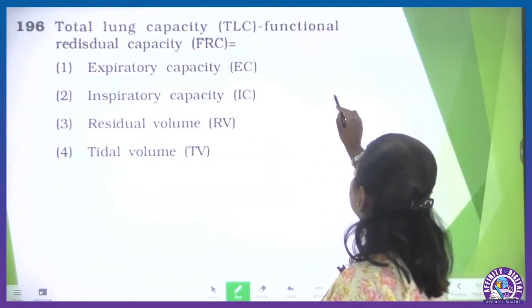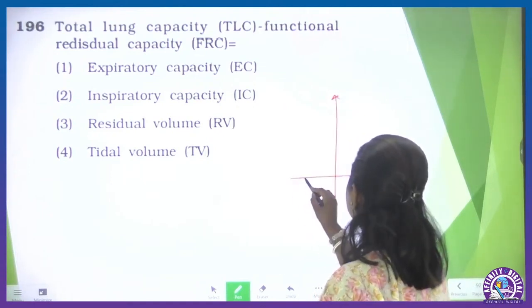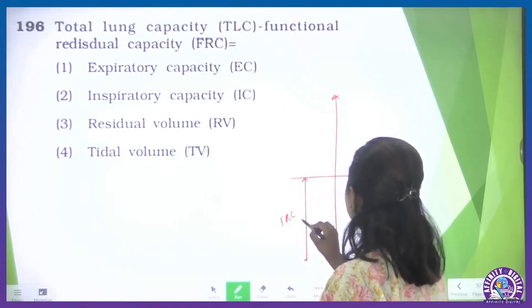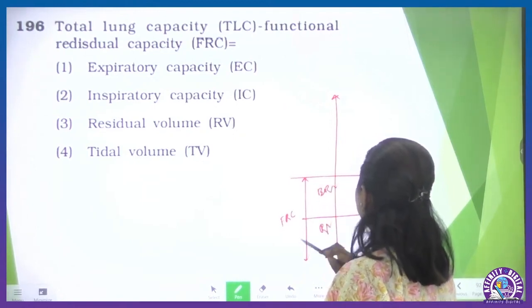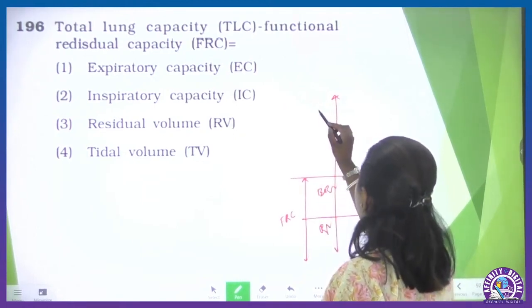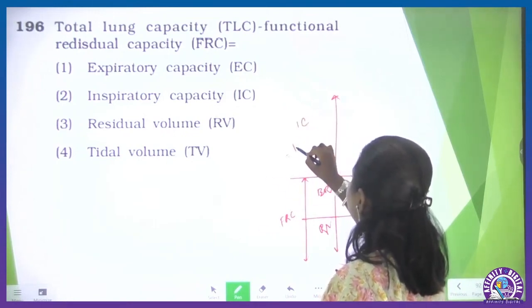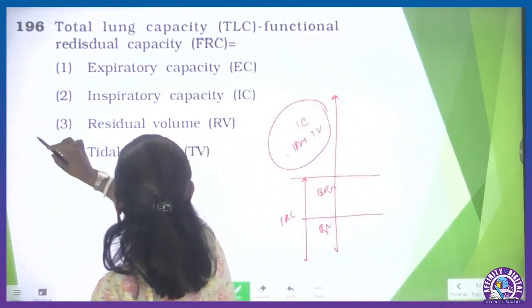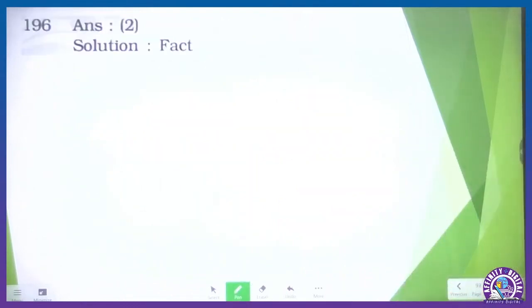Question 196: total lung capacity minus functional residual capacity. The total lung capacity minus FRC (functional residual capacity = ERV + RV) — subtracting FRC leaves IC, which is inspiratory capacity. IC = IRV + TV. So inspiratory capacity. The correct option is the second option for question 196.